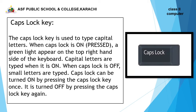Caps Lock key: This key is used to type capital letters. When Caps Lock is on or pressed, a green light appears on the top right-hand side of the keyboard. Capital letters are typed when it is on. When Caps Lock is off, small letters are typed. Caps Lock can be turned on by pressing the Caps Lock key once, and turned off by pressing it again.